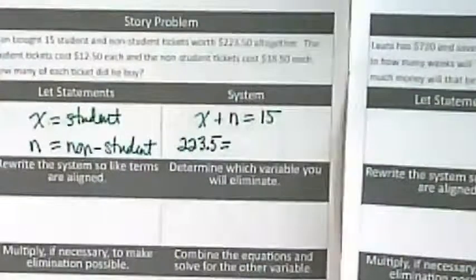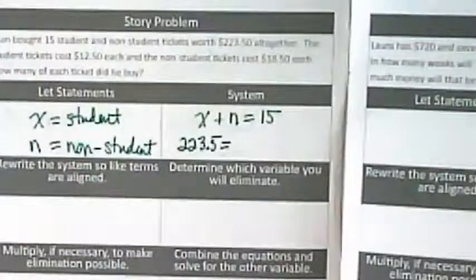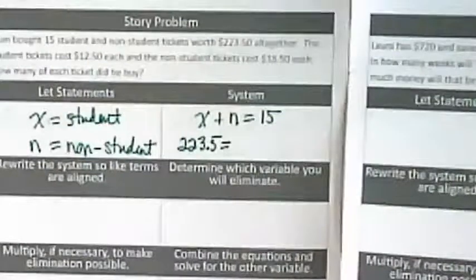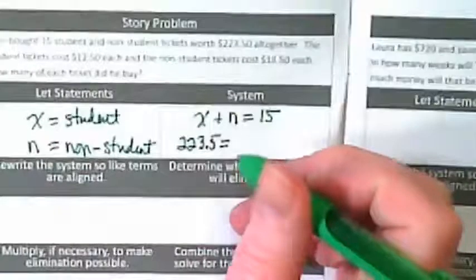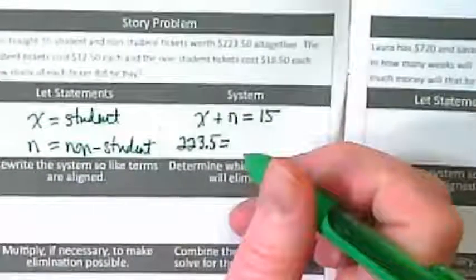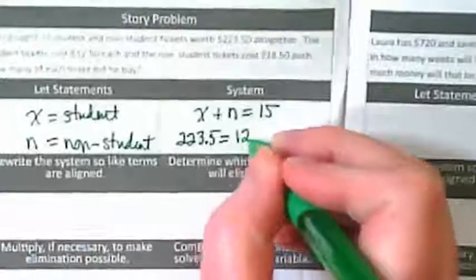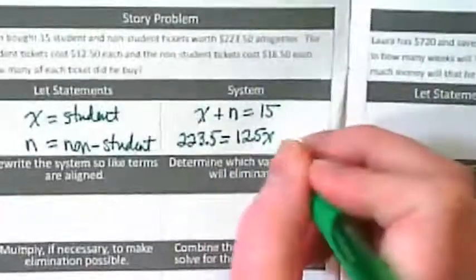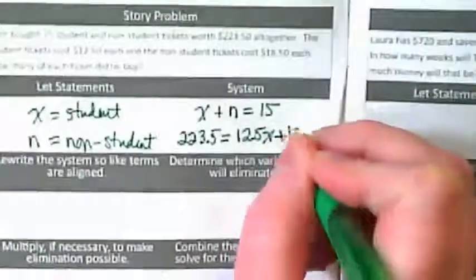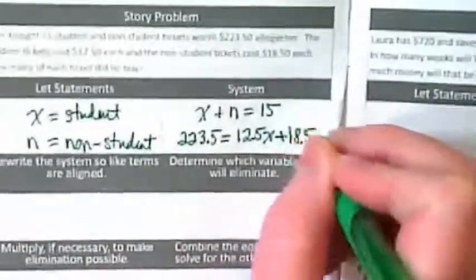The middle sentence tells us how much each kind of ticket costs, right? So what should I do after my equal sign here? What number am I putting with my X? I'm going to put 12.5X plus 18.5N.